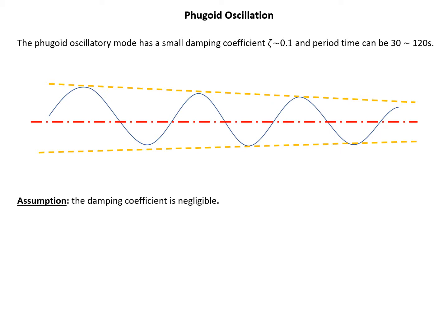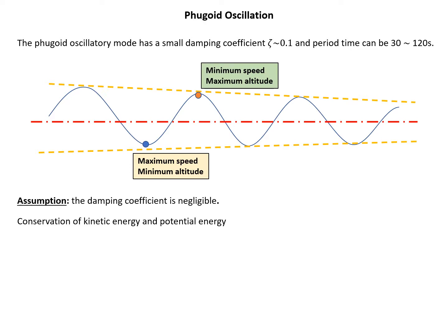Since the damping coefficient is very small, we can make an assumption to study the phugoid mode further. We assume the damping coefficient is negligible — approximately zero. Under this assumption, we have conservation of kinetic energy and potential energy. For example, the blue dot indicates the location where the aircraft has maximum speed but minimum altitude, while the orange dot indicates minimum speed but maximum altitude.